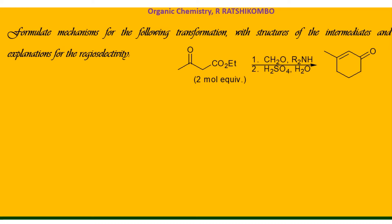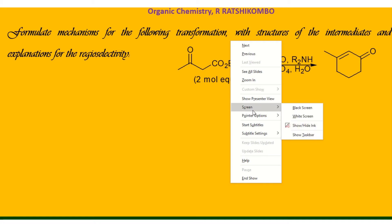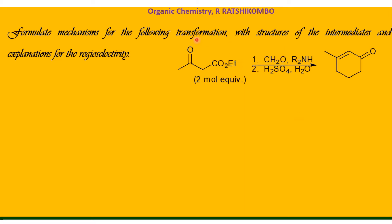In this video we are going to show the mechanism. The question says: formulate the mechanism for the following transformation, with the structure of the intermediate, and explain the regio-selectivity. We are given a reaction and a product, and we are going to show the mechanism of what has transpired. First of all, let's copy it.